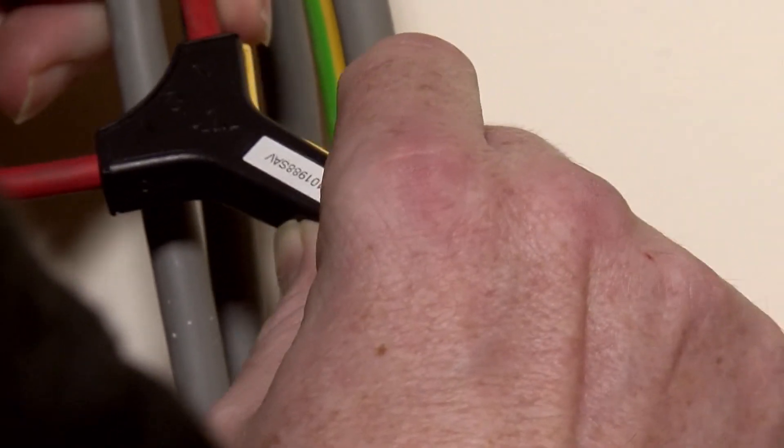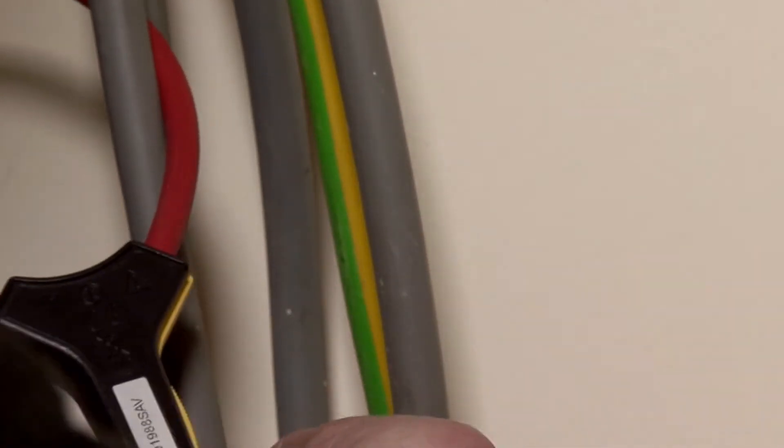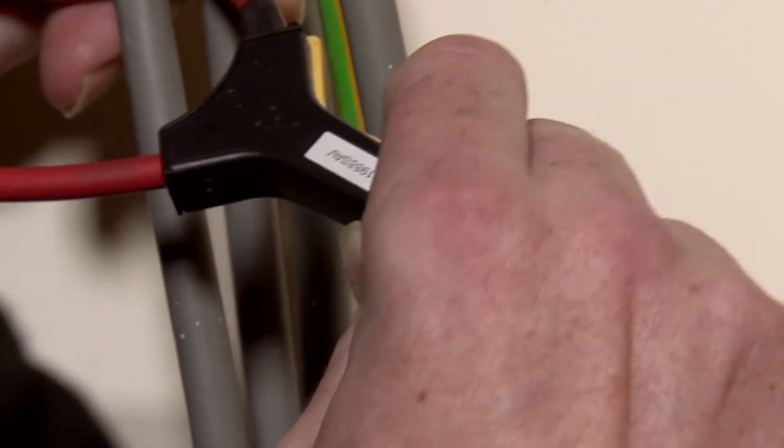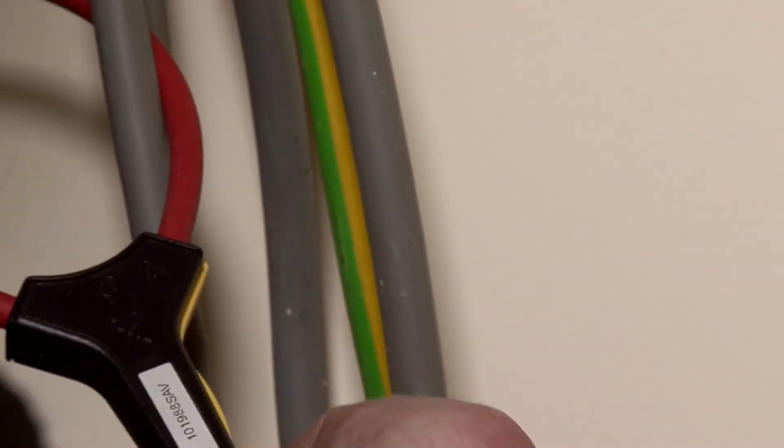If these are connected the wrong way round you'll record negative power values, but this can be corrected when you've downloaded the results. Make sure to push the end of the flexi back in until it clicks into place.